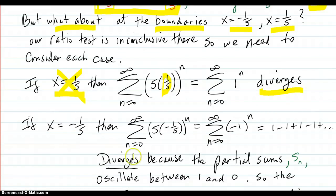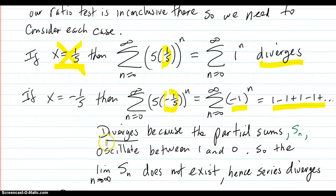What about negative 1/5? Then put it in here. You get this. That's this. And that diverges because the partial sums of S_n oscillate between 1 and 0.